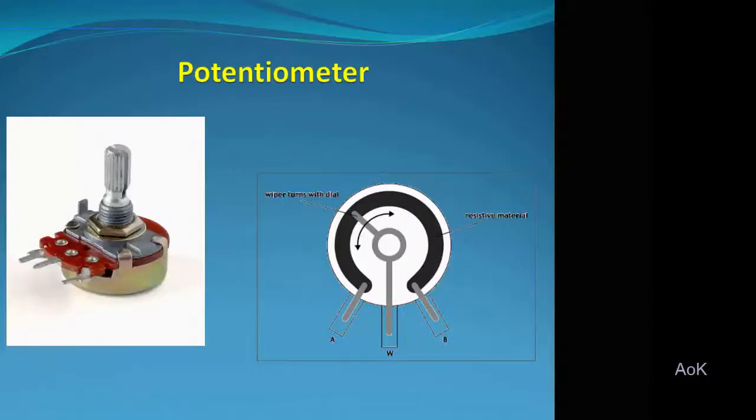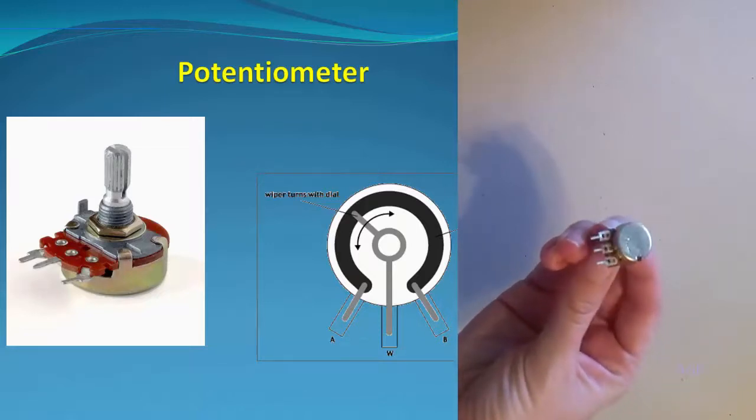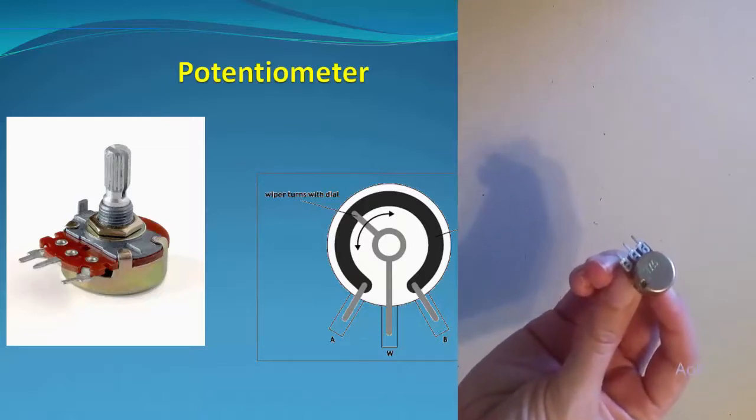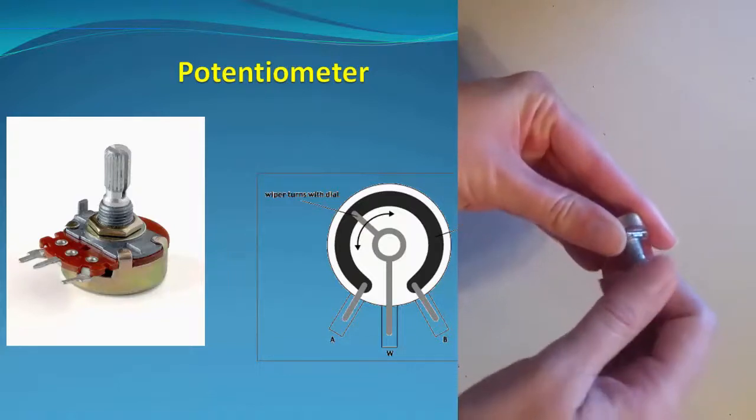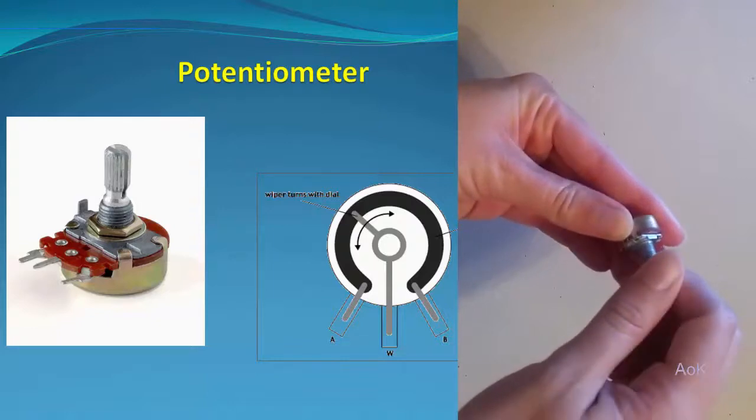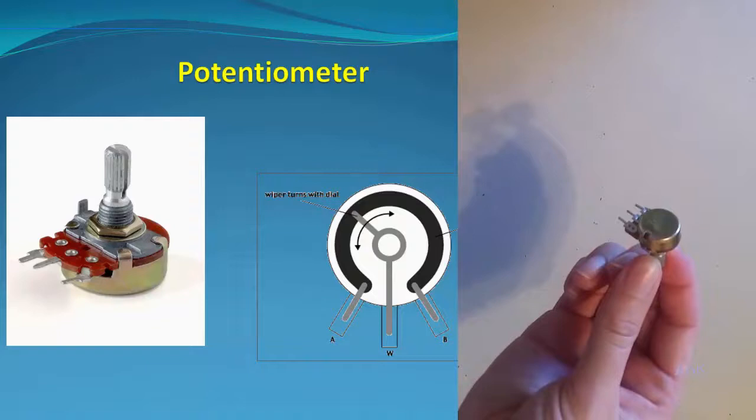Next we have a potentiometer. The potentiometer has three different legs. It's a variable resistor. This allows you to put it into a breadboard and turn the knob to adjust the resistance value. This can help in things like making an LED brighter or dimmer, and it can also adjust the volume of a small speaker.